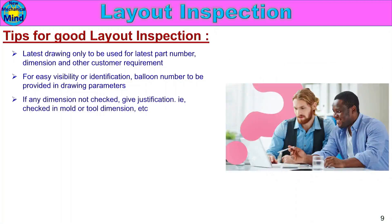If any dimension is not checked, provide justification — for example, that it is checked in the mold or tool dimension. If a dimension is difficult to check on the product, it may be easier to verify in the tool itself. In the report, note that the parameter was checked in the mold or tool dimensions.